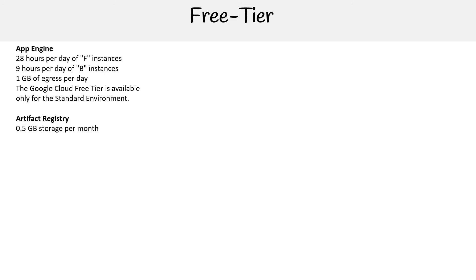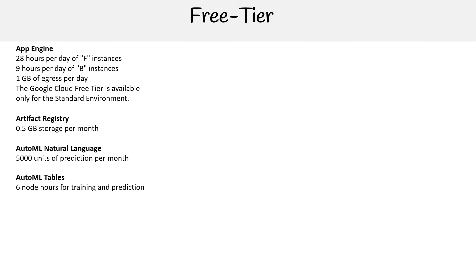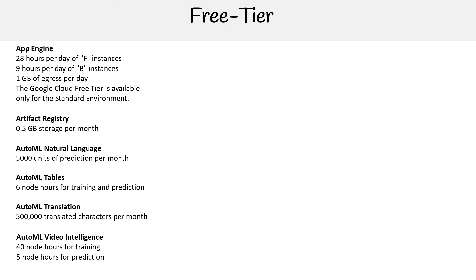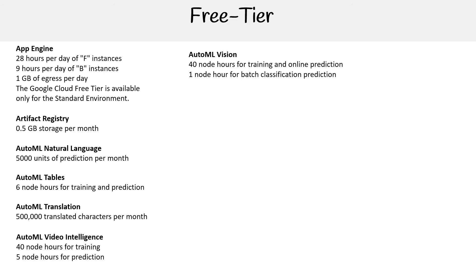For Artifact Registry, you get 0.5 gigabytes of storage per month. For AutoML Natural Language, you get 5,000 units of prediction per month. For AutoML Tables, you get six node hours of training and prediction. For AutoML Translation, you get 500,000 translated characters per month. For AutoML Video Intelligence, you get 40 node hours for training and five hours for prediction. For AutoML Vision, you get 40 node hours of training and online prediction, one hour for batch classification prediction, and 15 node hours for edge training.